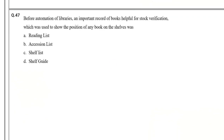Question number 47: Before automation of libraries, an important record of books helpful for stack verification, which was used to show the position of any book on the shelves, was — options: Reading list, Accession list, Shelf list, Shelf guide. The answer is Shelf list.